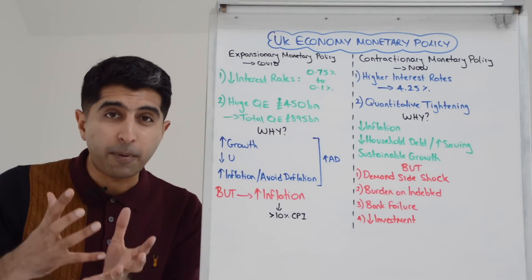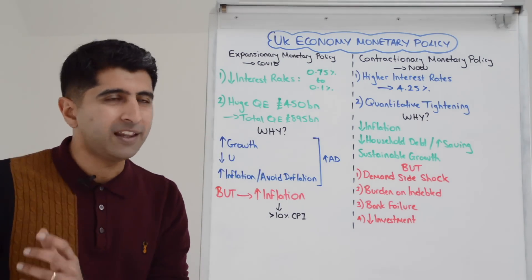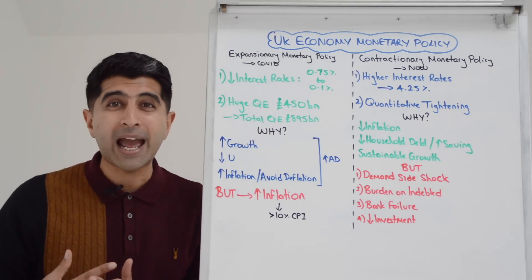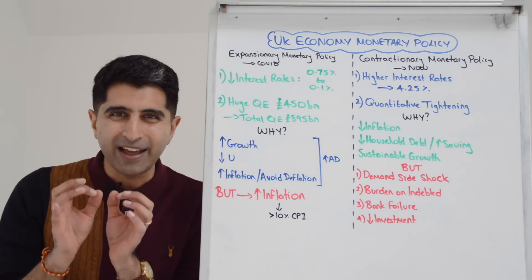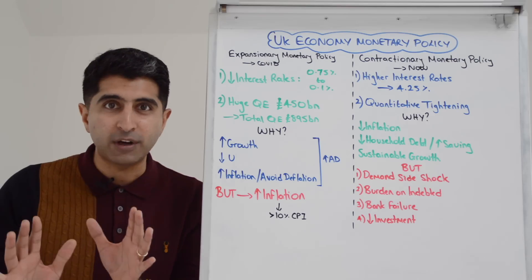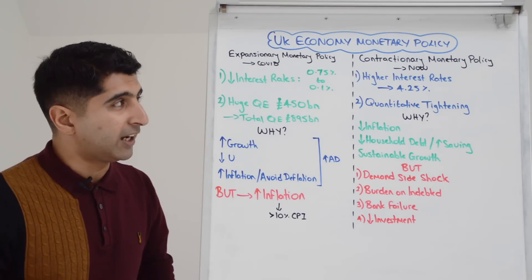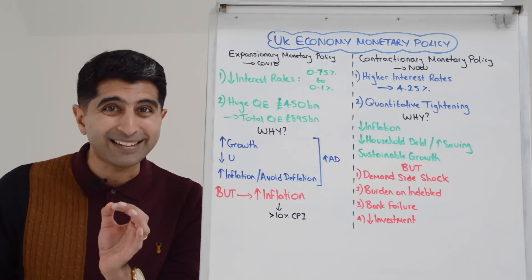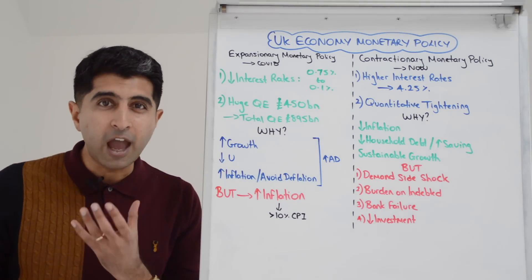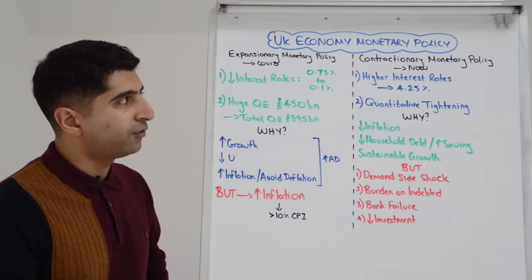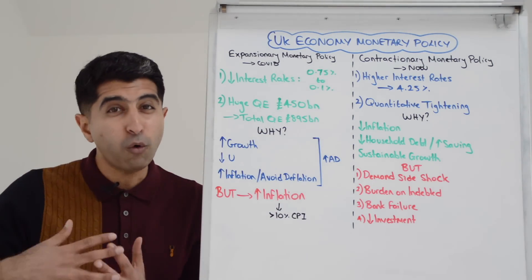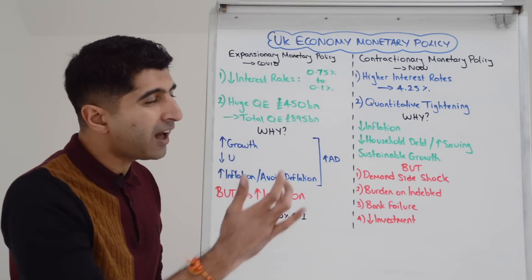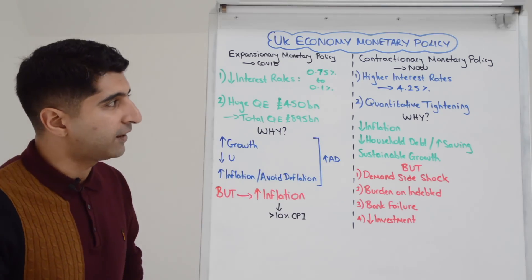The Bank of England — the Monetary Policy Committee within the Bank of England — cut interest rates all the way down to 0.1%. That is the lowest level in the history of the Bank of England. Bear in mind, the Bank of England has existed since the 1600s. We've never seen interest rates as low as this before.